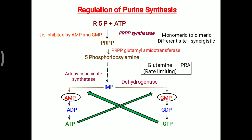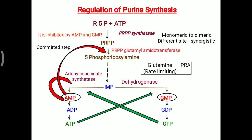Over this amidotransferase enzyme, there are different sites available for the attachment of AMP and GMP. When both attach, they synergistically inhibit this amidotransferase enzyme, making it a committed step for purine formation. AMP also inhibits the synthetase enzyme as well as the amidotransferase enzyme, while GMP is able to inhibit the dehydrogenase and amidotransferase enzymes.